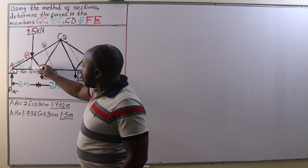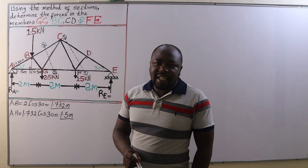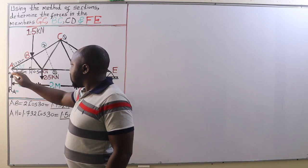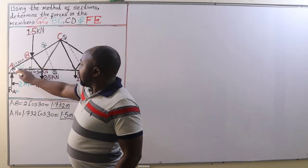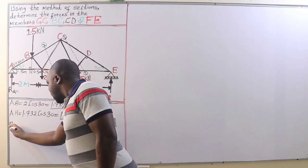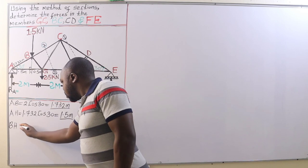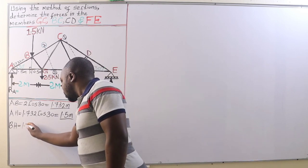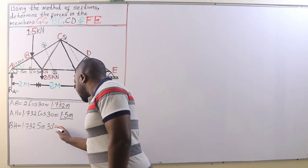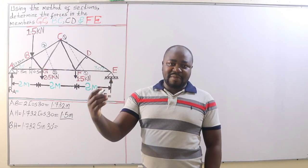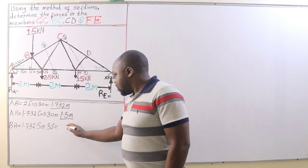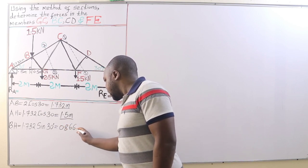We also need the length of member BH. Using triangle ABH with adjacent AH = 1.5 meters and hypotenuse AB = 1.732 meters, the length BH equals 1.732 multiplied by sin 30°, since sine is the ratio of the opposite to the hypotenuse. That gives us BH = 0.866 meters.